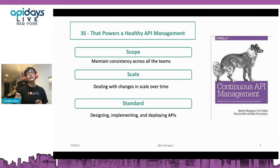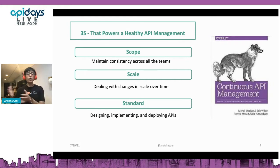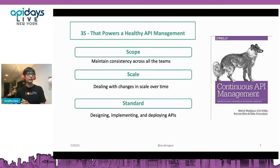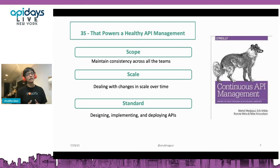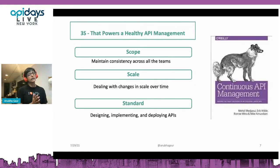That leads to the third element: standard. Establishing standards to provide consistent guidance for building and deploying APIs is another big challenge. The question then is: how do we move from specific standards to general standards so that we are empowering teams rather than constraining them? These three elements — scope, scale, and standard — are what drive the need for governance.